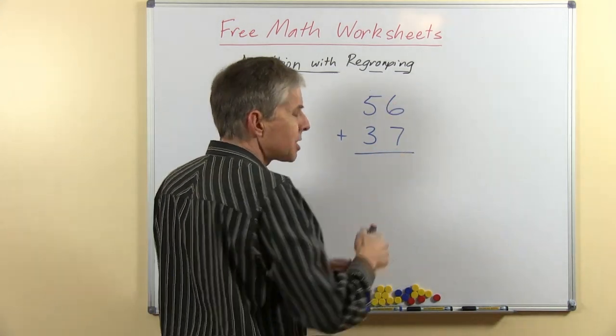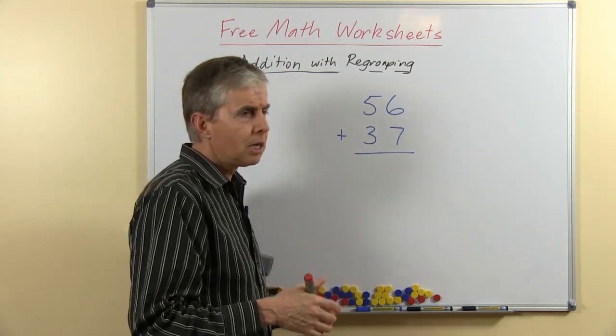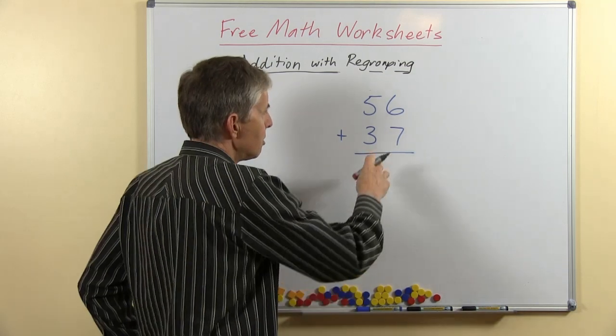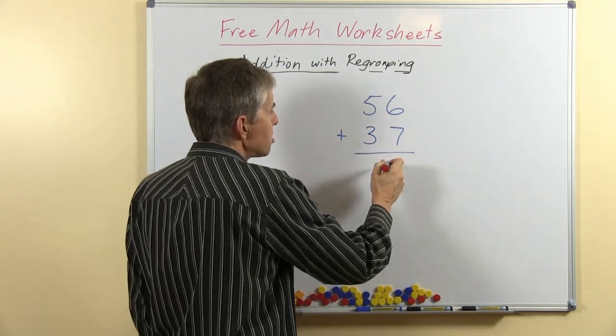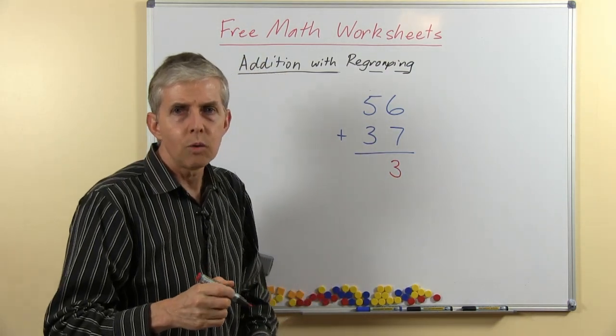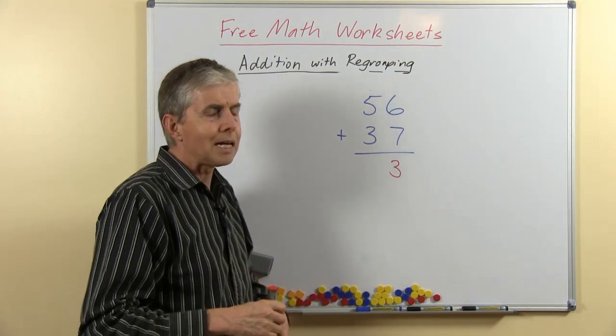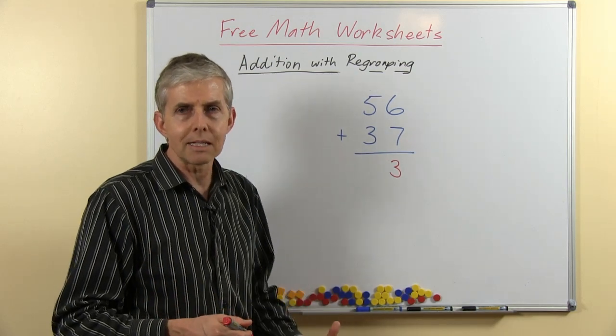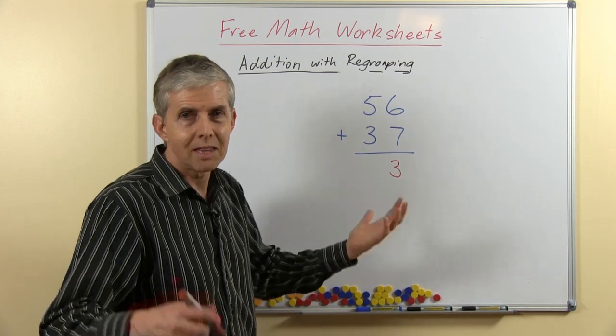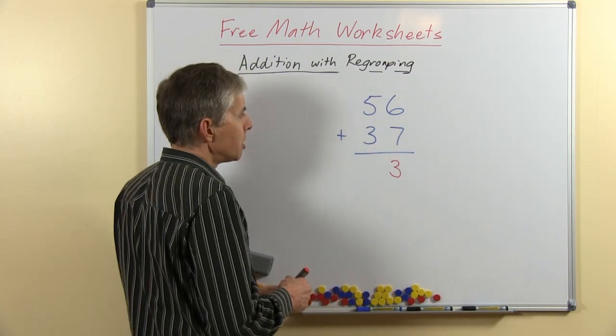Anyway, we're going to start with the ones of course, because that's the way we do this operation because of the need for regrouping sometimes. So 6 plus 7 is 13, we're going to write the 3, and then ask a question with our students such as, are there enough ones to make a 10? Do we have more than 9? That sort of question, there's a number of ways you could put it.